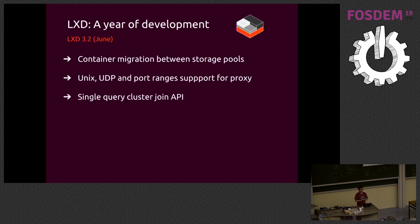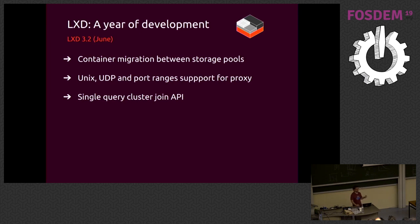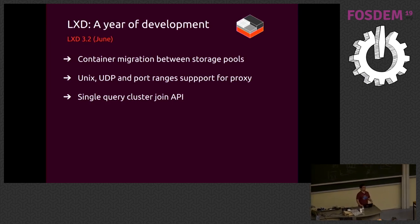In 3.2: container migration between storage pools — we had custom volumes before but couldn't move containers between pools on the same system, so we fixed that. We expanded the proxy device to support Unix sockets (both abstract and file-based), UDP, and port ranges. We also made it possible to join a node into a cluster with a single REST API call instead of the previous five or six calls.